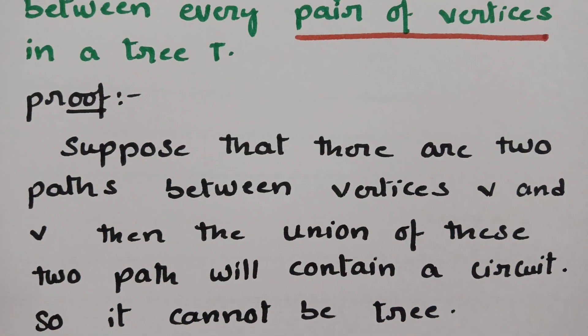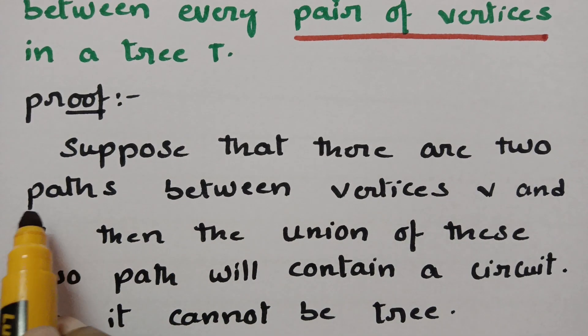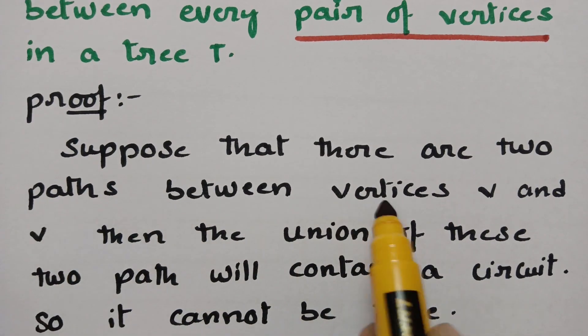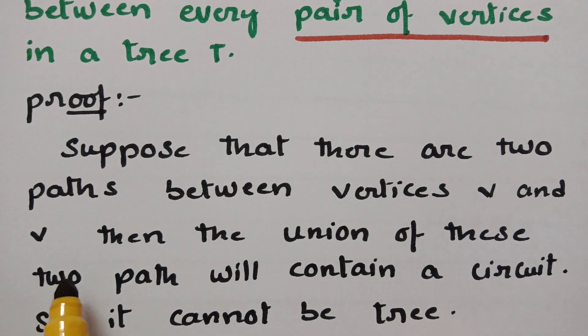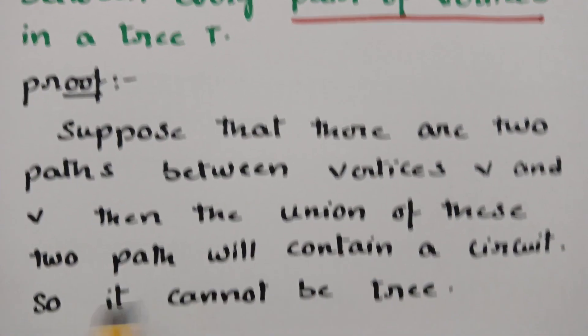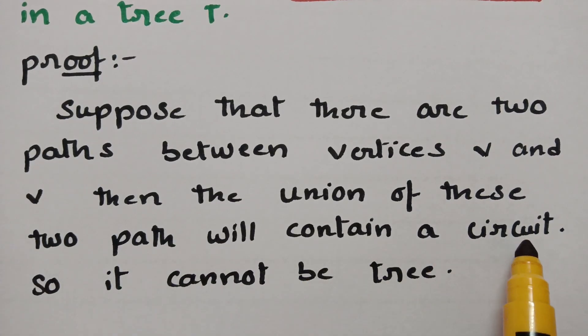In the proof, suppose that there are two paths between the vertices v1 and v2. Then the union of these two paths will contain a circuit.